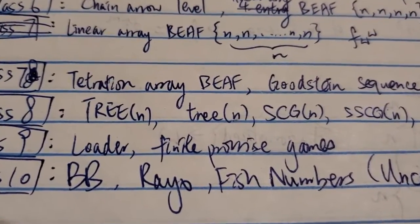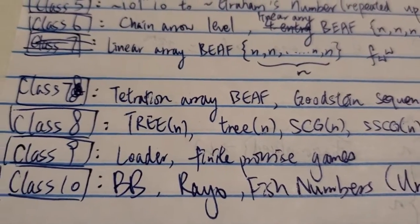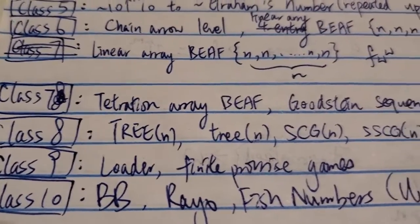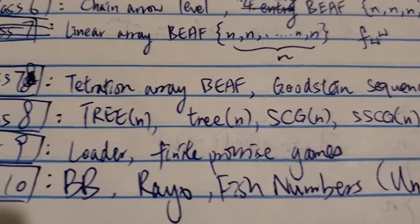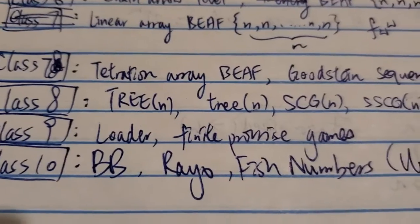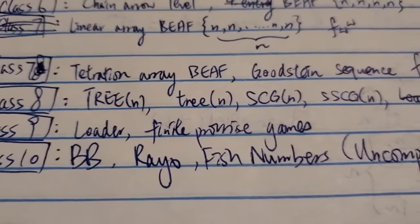So those are computable functions. Loader's number came from a computable function. These are probably the biggest numbers from computable programs or computable function. At least, in Googleology terms, it's slightly different from regular mathematics.